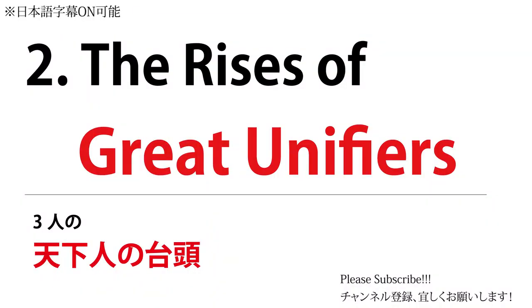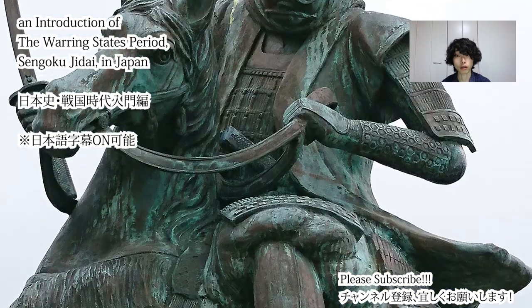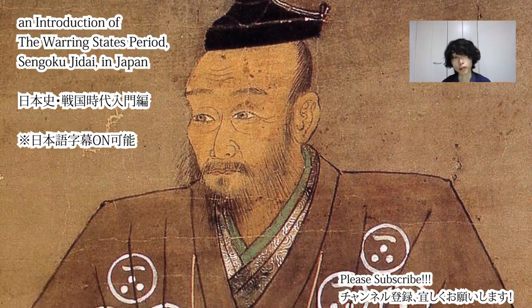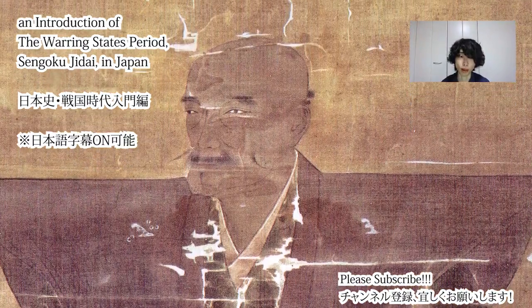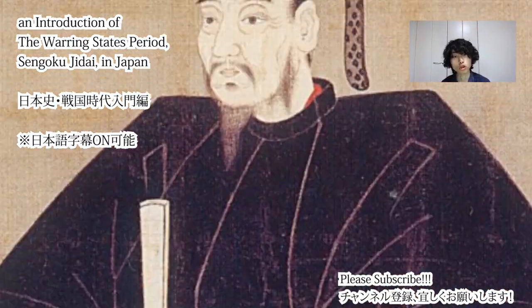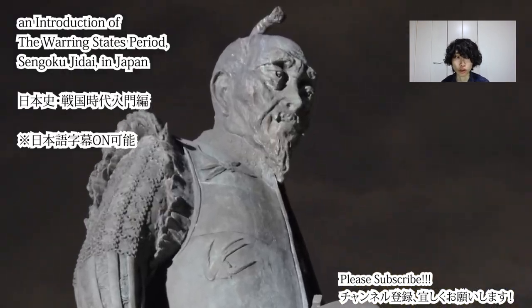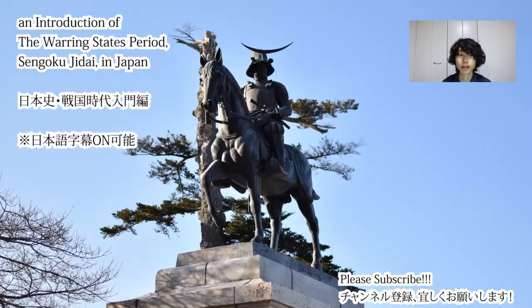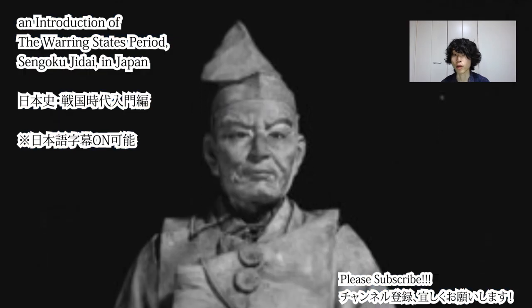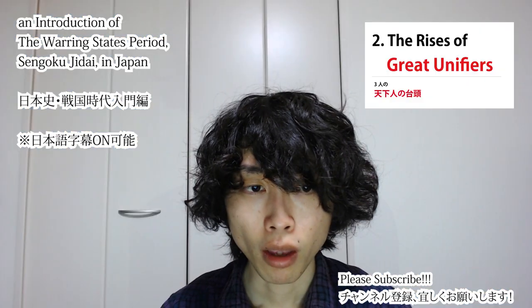Among the many warlords of this period, the most famous include Takeda Shingen, Uesugi Kenshin, Mori Motonari, Saito Dousan, Hojo Ujiyasu, Chosokabe Motochika, Oda Nobunaga, Toyotomi Hideyoshi, Tokugawa Ieyasu, Date Masamune, Shimazu Yoshihisa, and others. In this video I will focus on the three great unifiers from among these famous names.